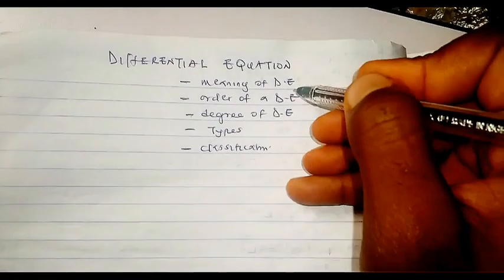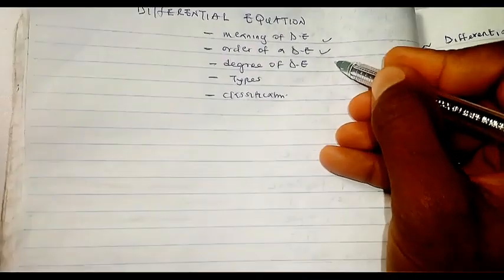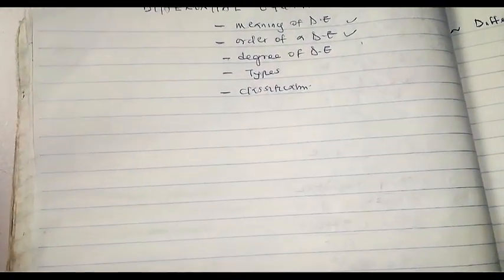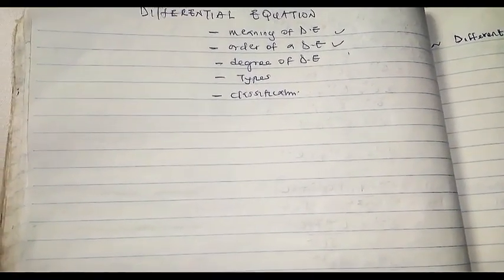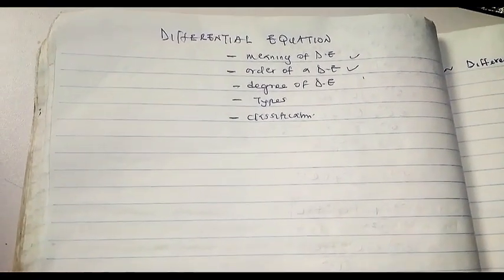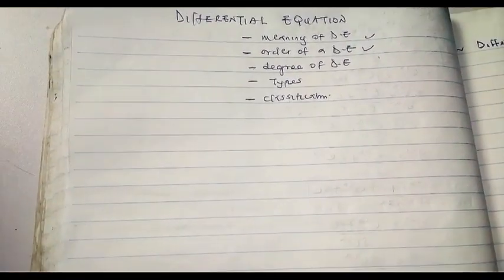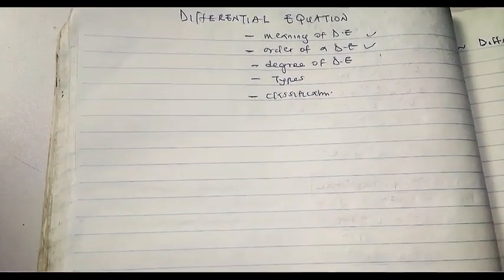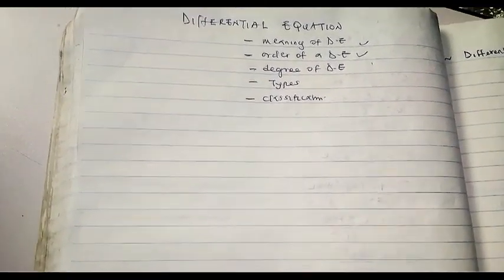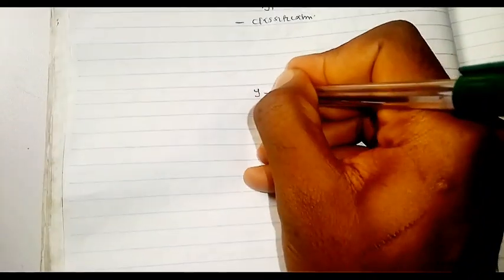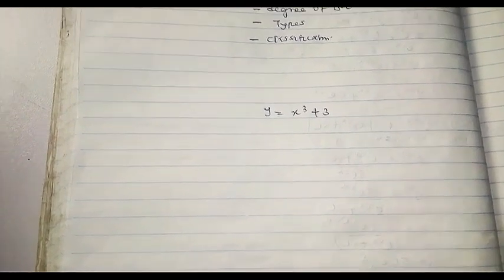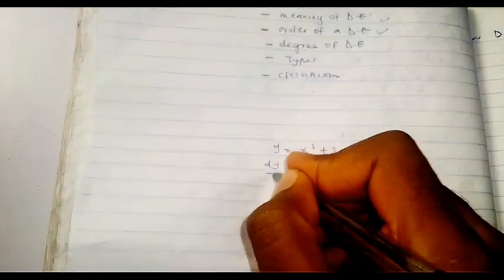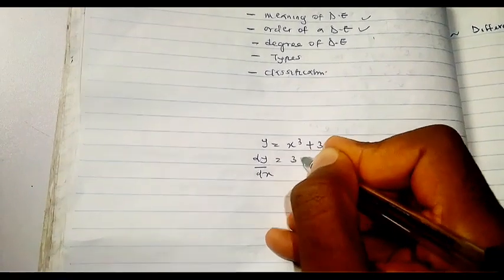Now we move to the order of a differential equation. The order of a differential equation is simply the highest derivative in that differential equation. In basic differentiation, we have first order, second order, third order derivatives. For example, if we have y = x³ + 3 and we differentiate once, we get dy/dx = 3x².